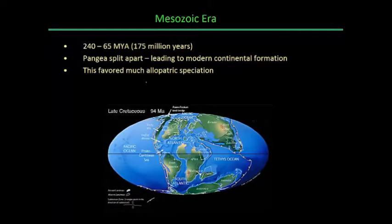The Mesozoic lasts about 175 million years, marked at its beginning by the breakup of Pangaea. When we look at a map of the Earth's surface, it's starting to resemble what we see for the modern globe — the positions of the continents are moving into positions much similar to what we see today.